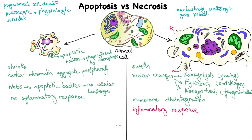The cellular membrane disintegration in necrosis leads to the formation of lipid structures called myelin figures, which are not observed in apoptosis, as we have no membrane disintegration.